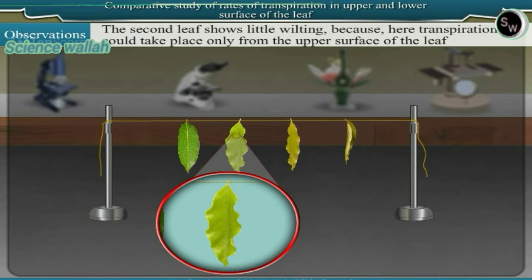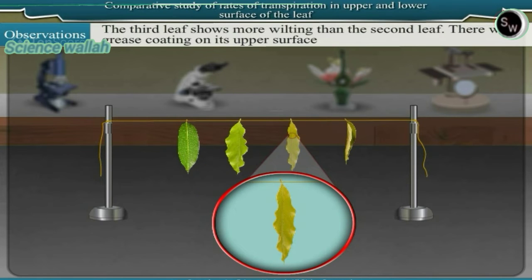The third leaf shows more wilting than the second leaf. There was grease coating on its upper surface.